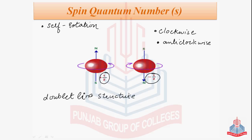So this duplet line structure confirms that the electron is spinning about its own axis. This spinning or self-rotation is either clockwise or anticlockwise, which we have shown to be plus half or minus half.